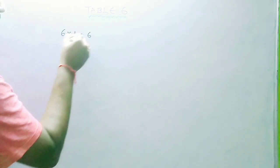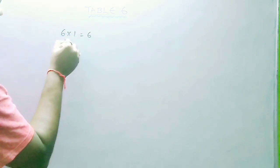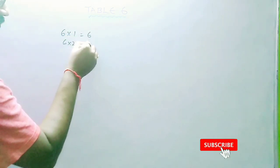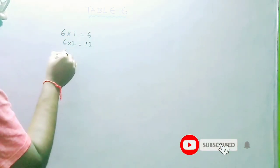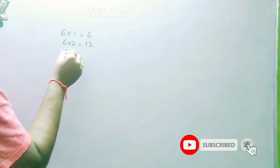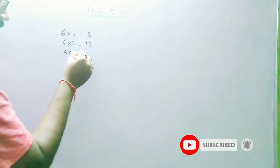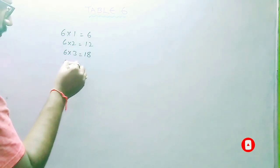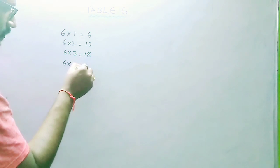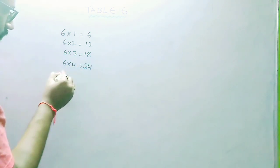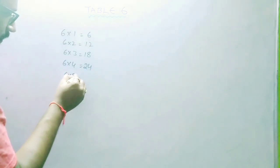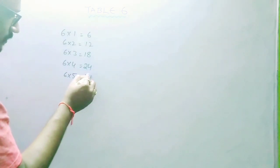6 1s are 6, 6 2s are 12, 6 3s are 18, 6 4s are 24, 6 5s are 30.